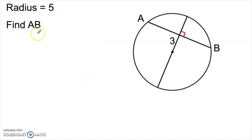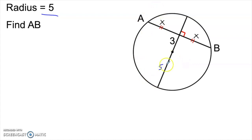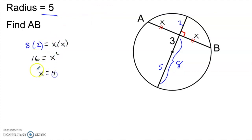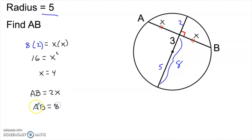Here we have a circle whose radius is given as 5 and we're asked to find the length of AB. Since this is a right angle, the chord is perpendicular to the diameter, which means the chord is bisected by the diameter — so both halves are x. The radius is 5, so the other radius on the opposite side is also 5. Since one piece of the diameter is 3, the other piece is 2. Treating this as intersecting chords, one segment of the diameter is 5 + 3 = 8, and the other is 2. So 8 × 2 = x², which means x² = 16 and x = 4. The answer is AB = 2x = 8.